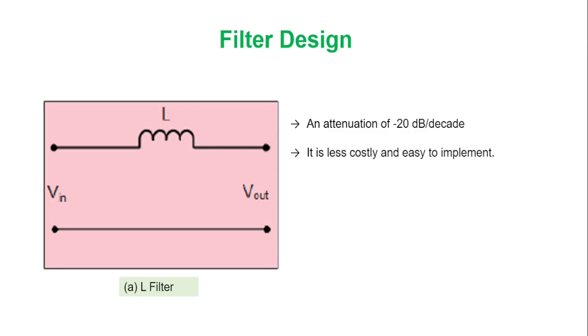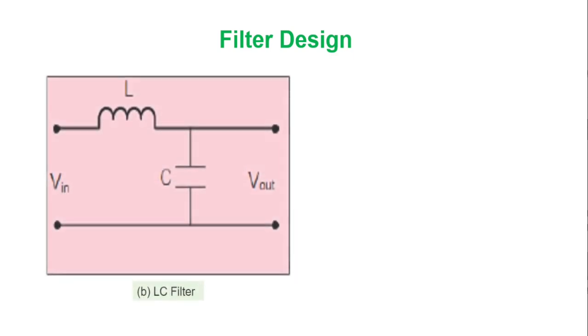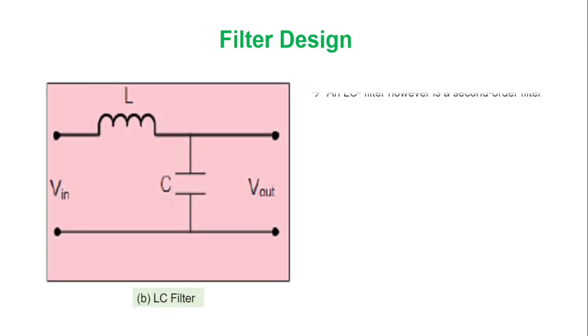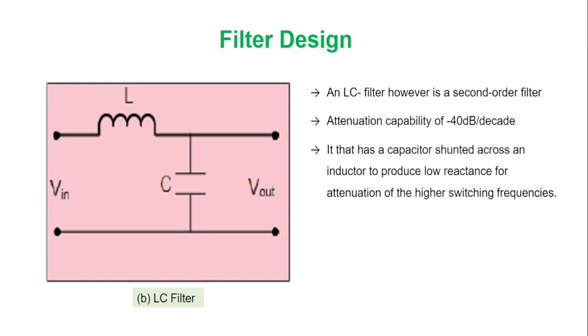An LC filter on the other hand is a second order filter with an attenuation capability of -40 decibels per decade. This includes an inductor and a capacitor.